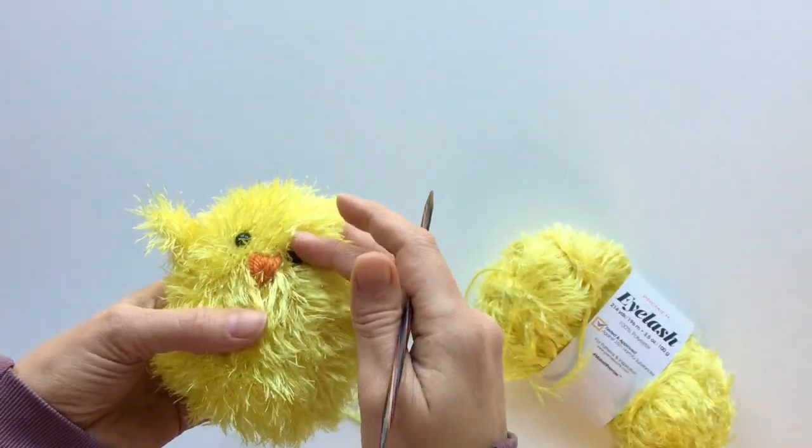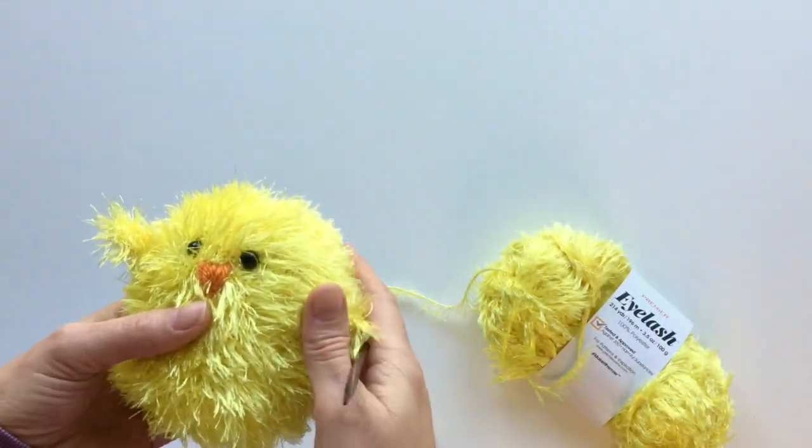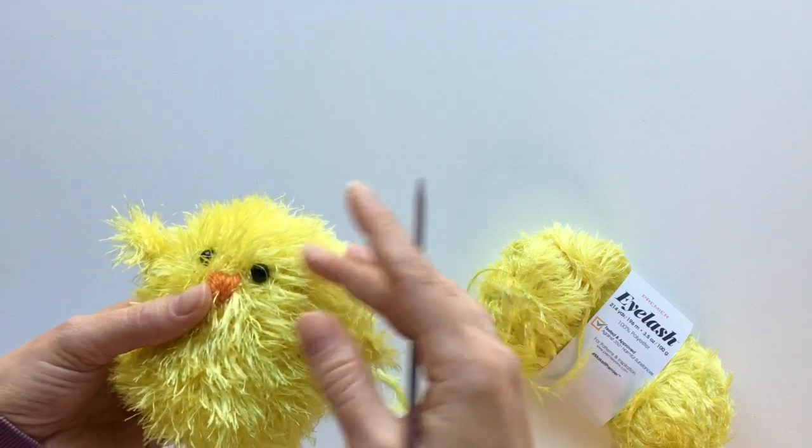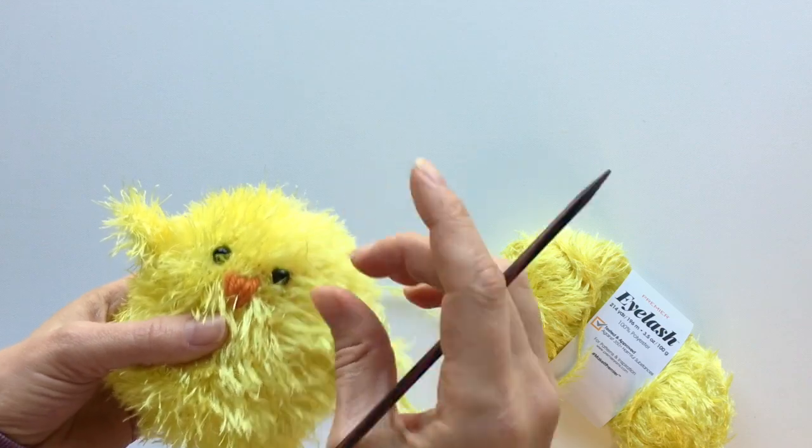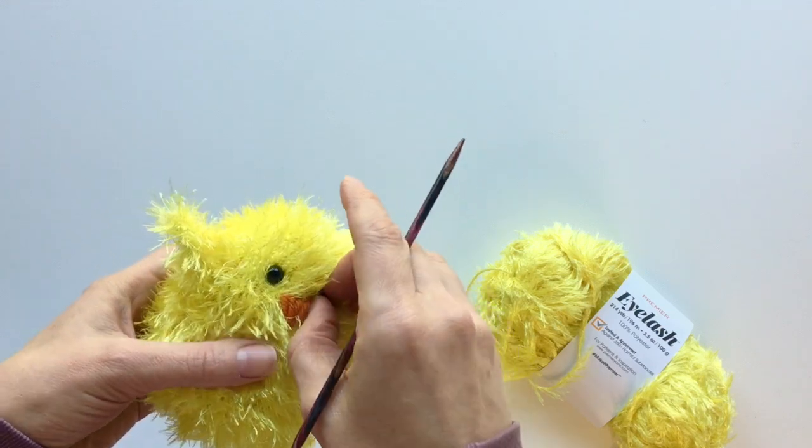For the eyes, if you are making this for a small child, we do recommend that you embroider the eyes instead of using safety eyes, as these can come out.